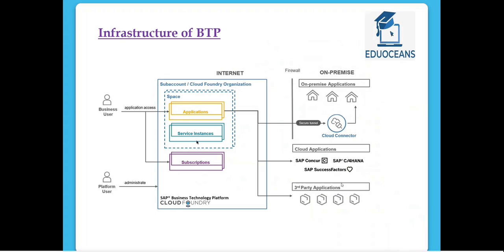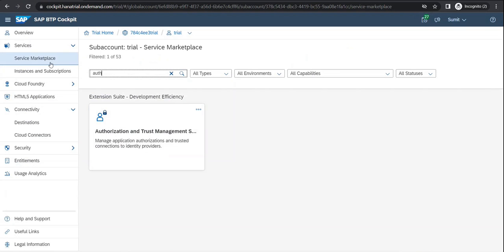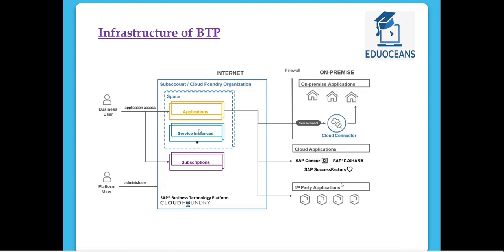Once we do have an application connecting to on-premise, the connection would go via the cloud connector — that's how we would be connecting. If I do have some sort of service instances — what are service instances? For me to connect to my application, I would need a destination service connection using a cloud connector. But for me to connect to some sort of native cloud services, I would need service instances. These are nothing but my instances and subscriptions. These two things would come into play, and this whole bunch would get executed in a sub-account on the Cloud Foundry level — on a SAP BTP Cloud Foundry runtime.